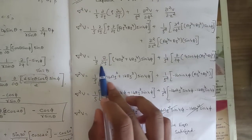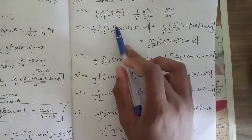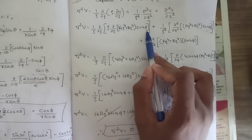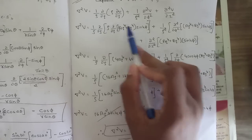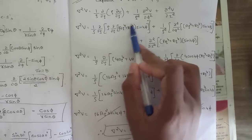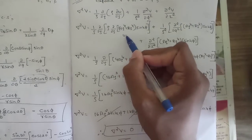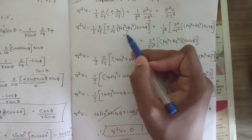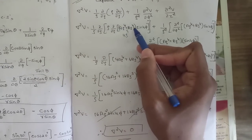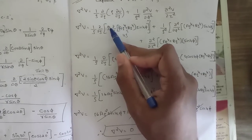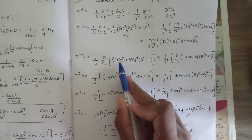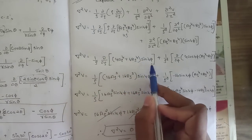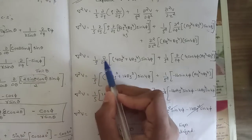Differentiating with respect to ρ: sin4φ is kept constant, and the differentiation of ρ⁴ is 4ρ³. So we get 4aρ³ and 4bρ³; multiplied by the outer ρ this gives 4aρ⁴ + 4bρ⁴ sin4φ.